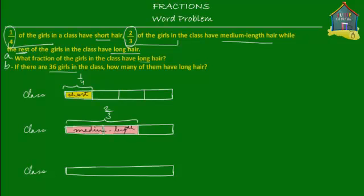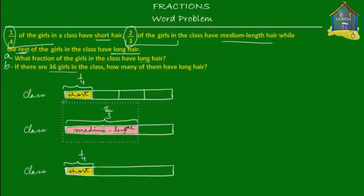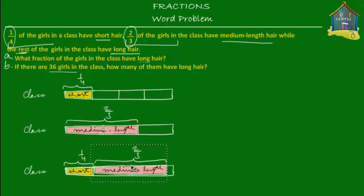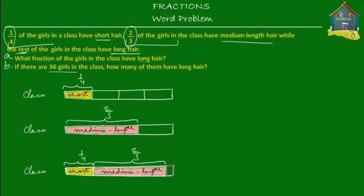The rest of the girls have got long hair. Taking the last model, we mark one fourth for short hair and two thirds for medium hair, and the remaining portion — shown here in purple — represents the girls with long hair. We need to find what fraction of the class this remaining portion is. That's question A.